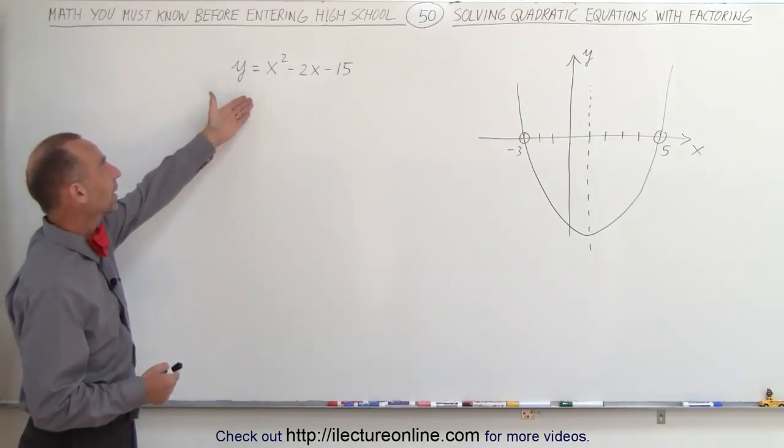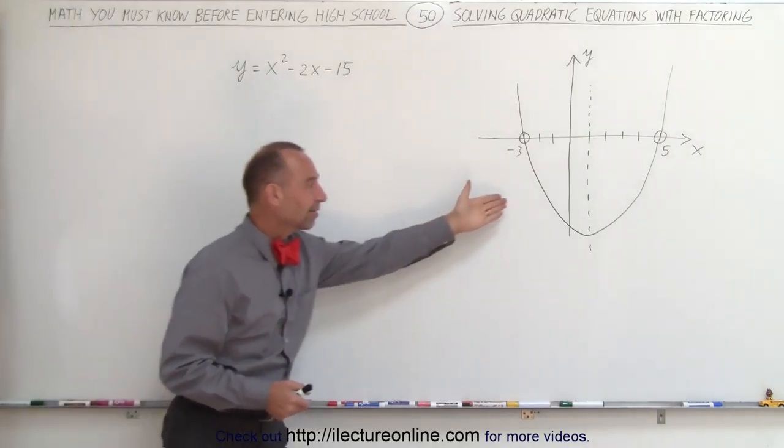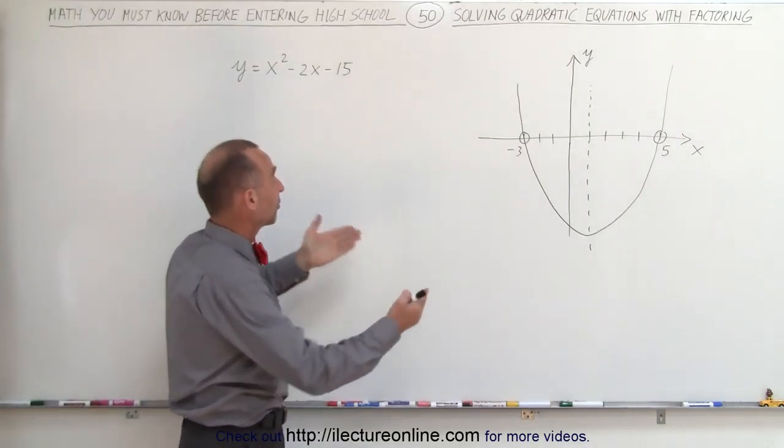Here we have the equation y = x² - 2x - 15, and on the right side we've drawn the graph that represents this equation.